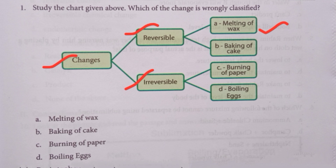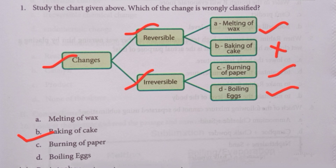Then option B1, baking of cake — it is not reversible because it is irreversible. Then irreversible, option C, burning of paper — it is correct, it is irreversible. Boiling of egg is also an irreversible change. So the answer is option B, baking of cake, because it is wrongly classified.